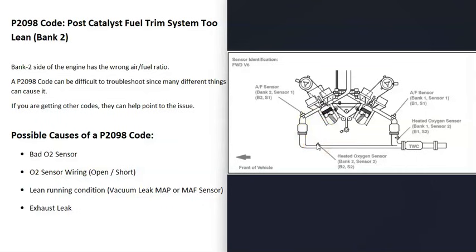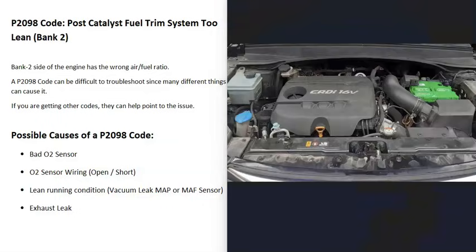The next possible cause is some kind of lean running condition on the bank 2 side of the engine. A lean condition means too much air going in compared to the fuel in the mixture. This could be something like a vacuum leak, a bad manifold absolute pressure (MAP) sensor, or a bad mass airflow (MAF) sensor. Usually these issues will generate other codes, although it is possible they don't.